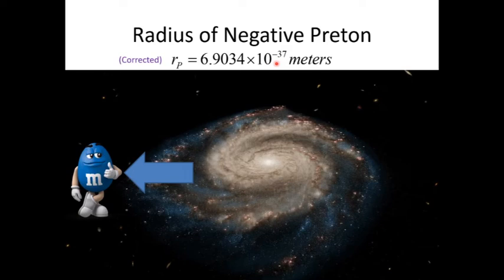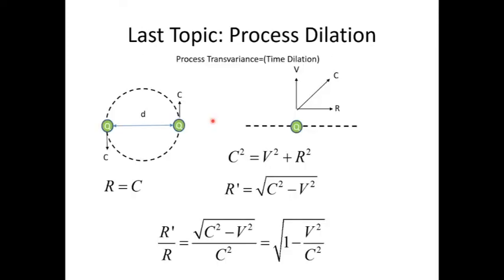I did a calculation that if you took all of the visible matter in a galaxy, reduced it down, and packed the pretons edge to edge, all the pretons of that entire galaxy would fit inside the candy shell of an M&M with space left over. I hope I did the calculation right — I'm human, I do make mistakes, I'm not a physicist.